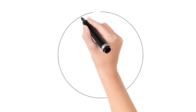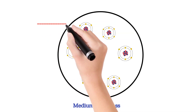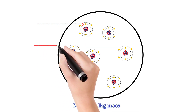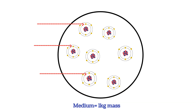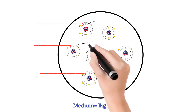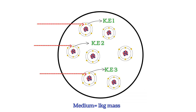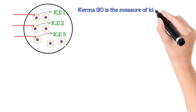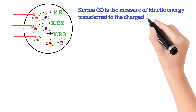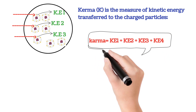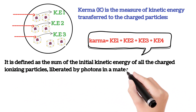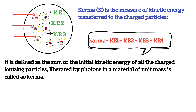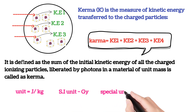Let's consider a medium having 1 kg mass irradiated with uncharged particles like X-ray or gamma ray. The incident radiation interacts within the medium and initially transfers some energy to the charged particle, and the charged particle electron is released with initial kinetic energy KE. KERMA K is a measure of kinetic energy transferred to the charged particles. It is defined as the sum of the initial kinetic energy of all charged ionizing particles liberated by incident photons in a material of unit mass. The unit for KERMA is joule per kilogram, the SI unit is gray, and the special unit is rad.